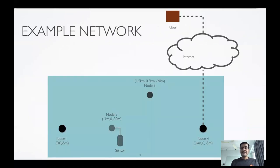We'll be using an example network in this part of the tutorial. It's very similar to the example network from the previous part, with a couple of changes: there's no node 5 — we removed it — and node 4 has a dotted line connected to the internet. Node 4 is deployed at the surface of the sea, at five meters depth. You could think of it as a node connected to a buoy with a Wi-Fi backhaul or SATCOM connection to the internet.